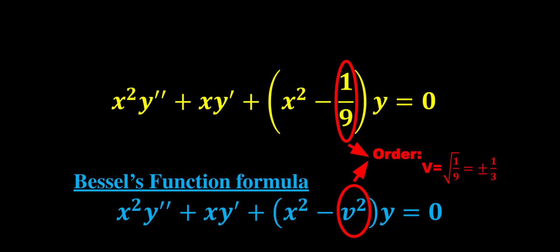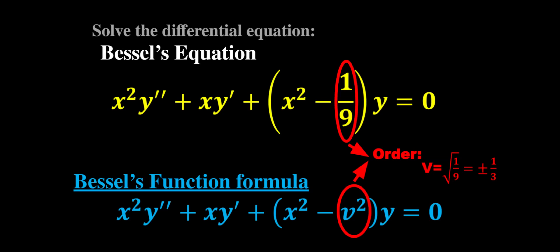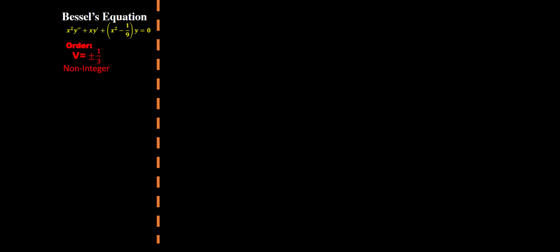This is called the order of the function or sometimes even called the index of the function. To solve this equation we need to notice that our order is one of the two kinds: non-integer or integer.